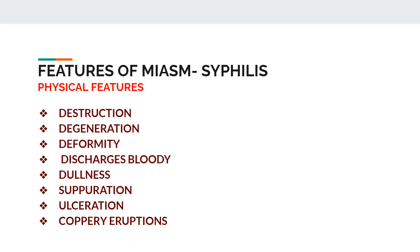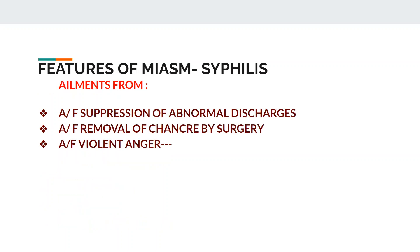Destruction is seen in the tissues of organs. Degeneration of the nerves and deformity is seen in the joints. Discharges from ulcers are bloody. The patient is dull. There is a suppuration tendency, ulceration leading to necrosis and gangrene, ulceration of the carbuncle variety, and there will be coppery eruptions.